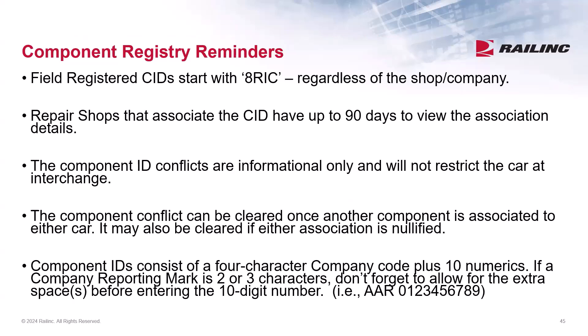There are a few things to keep in mind when using Component Registry. Field registered components will start with 8RIC, regardless of the shop or company. The repair shops that associate the component will have up to 90 days to view the association details. Equipment with Component ID conflicts are informational only and will not restrict the car at interchange. The component conflict can be cleared once another component is associated to either car, or if either association is nullified. Component IDs consist of a four-character company code plus 10 numerics, so if a reporting mark is two or three characters, don't forget to allow for the extra spaces when entering the 10-digit number.